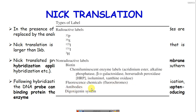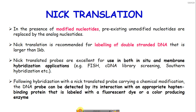Among non-radioactive labels we have biotin, fluorescence chemicals, fluorochromes, antibody-based systems, and the digoxigenin system. Any of these choices can be used to label probes prepared by nick translation, which are used for both in situ and membrane hybridization techniques like FISH, cDNA library screening, and Southern hybridization.